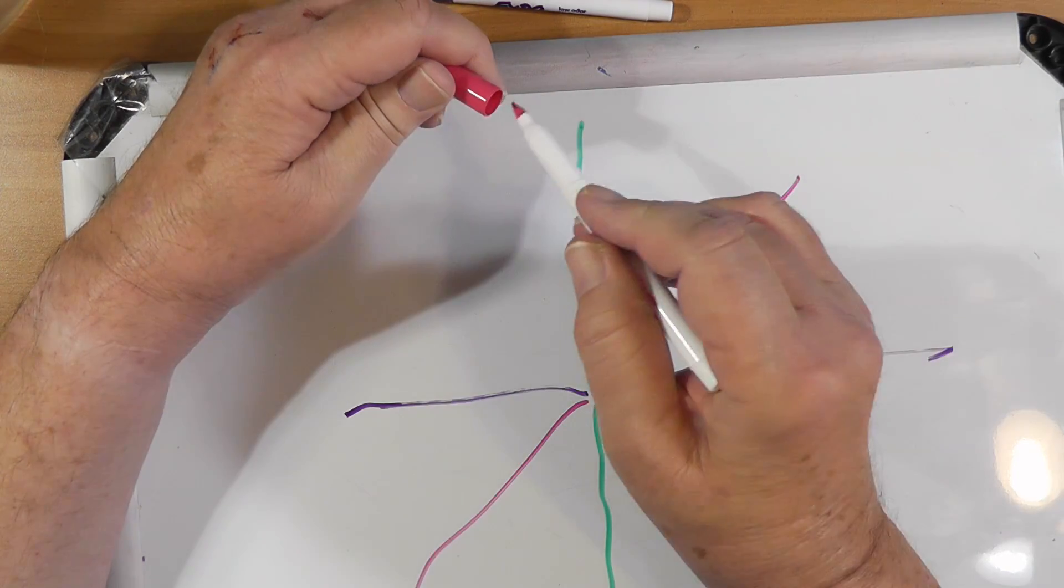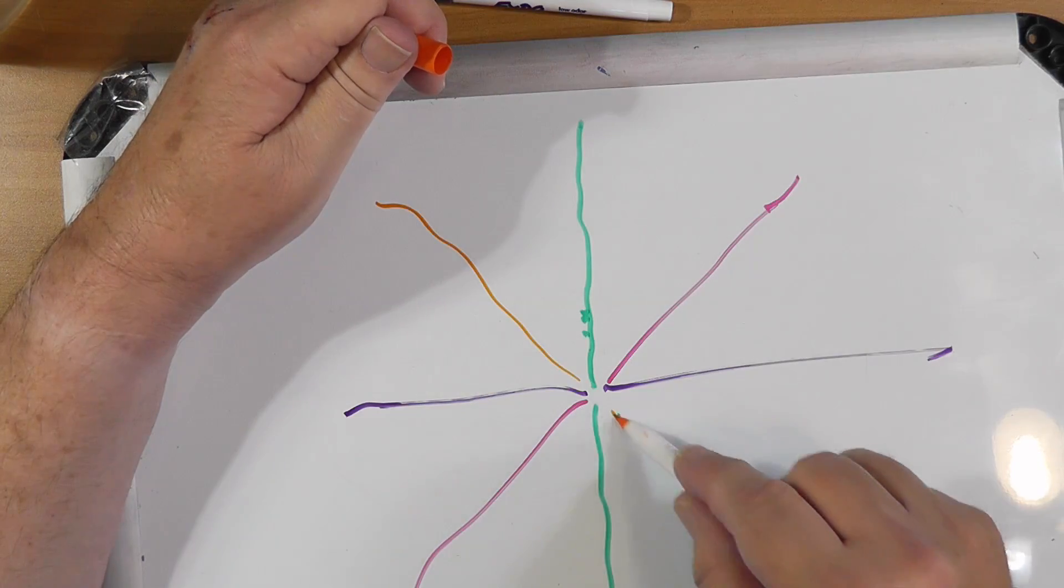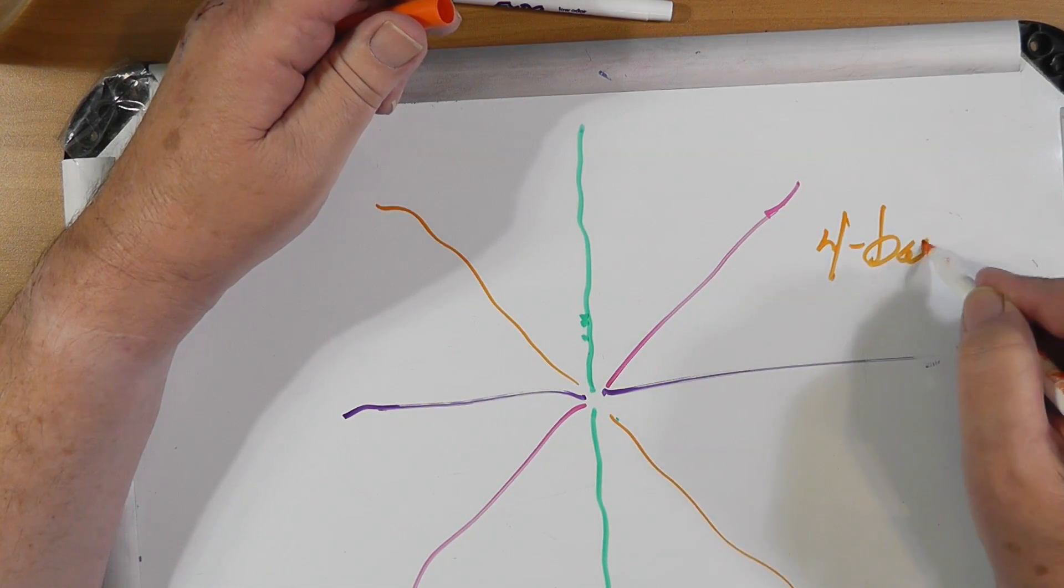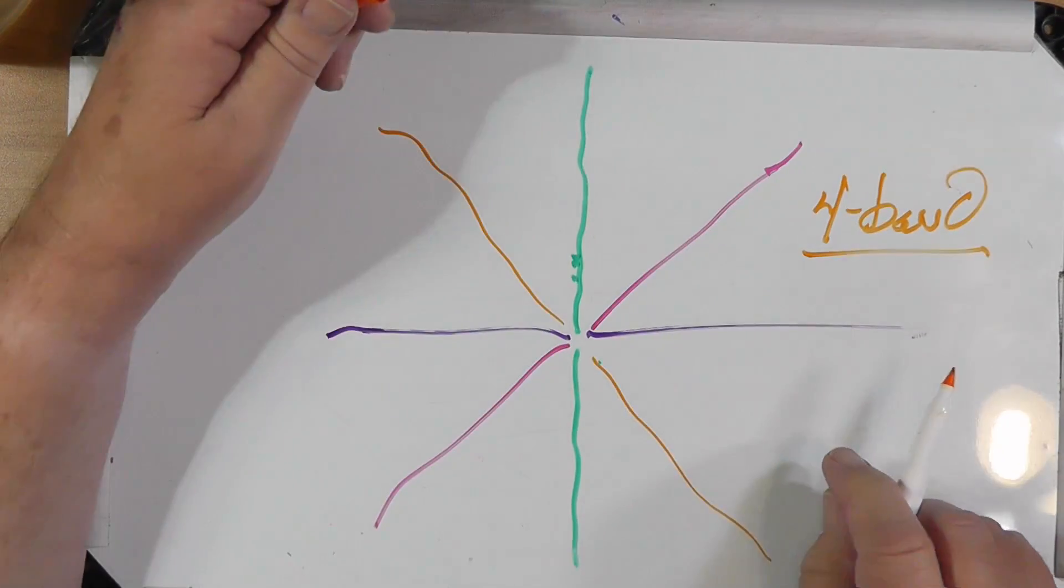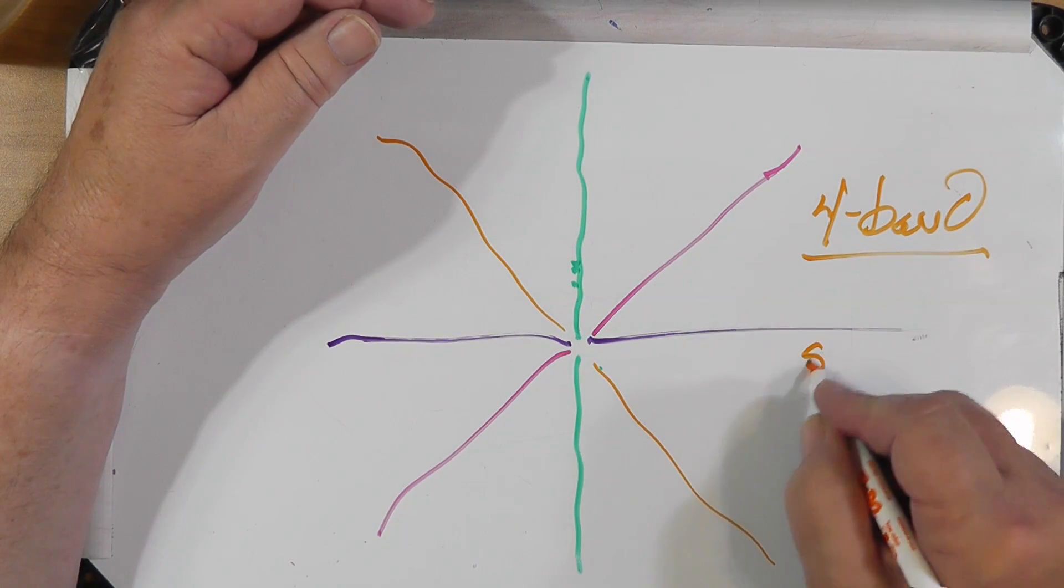And why not put another one this way? Again, same size. And another one this way. Now, this is actually a four-band antenna.